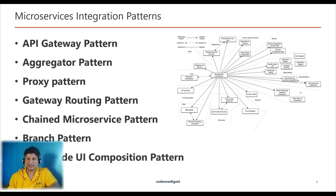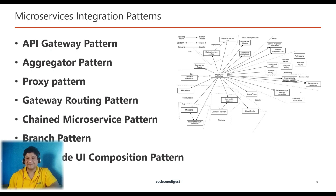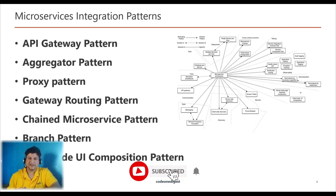A connection between applications via a common messaging system is used to exchange data or invoke behavior using messages of a predefined format. The messaging style maximizes decoupling between systems not only from an interface perspective but also from a time-based perspective. There are seven different design patterns in this integration category.